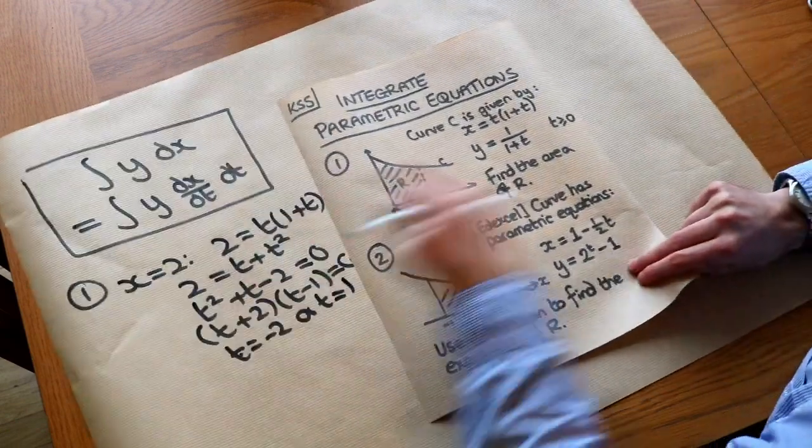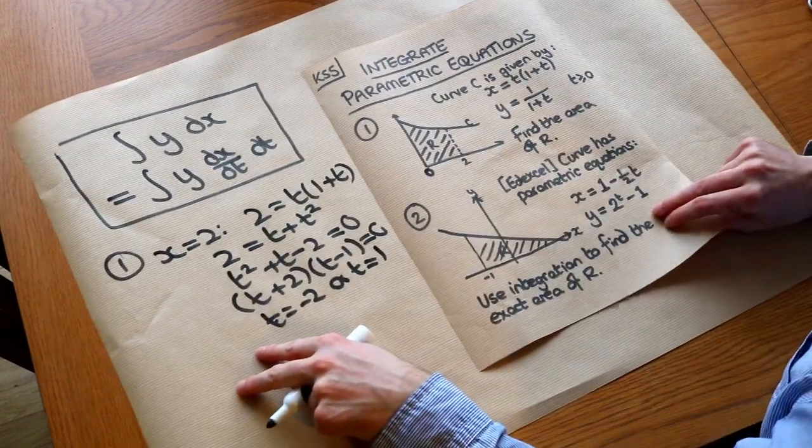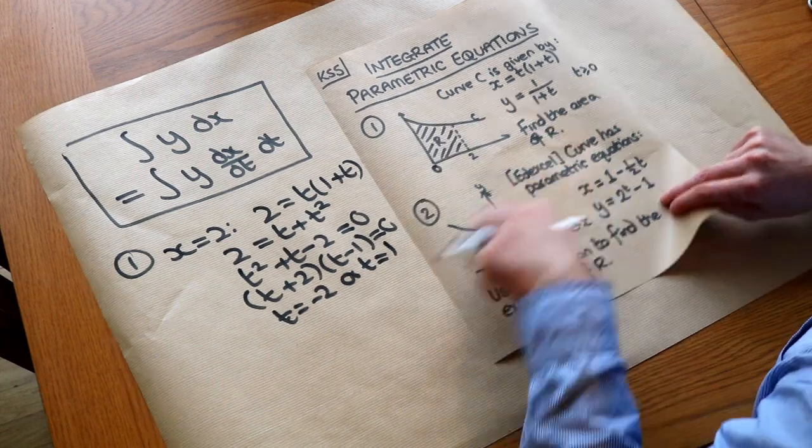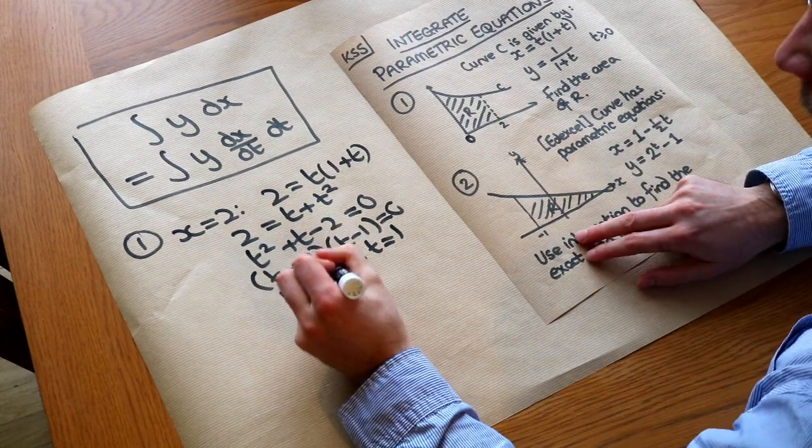Now notice here that it tells us that T is at least equal to 0, we're only considering positive T when we sketch this parametric curve, so we only want that T value of 1.